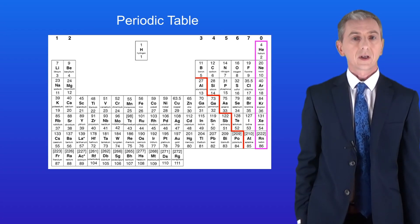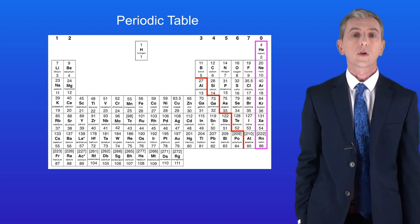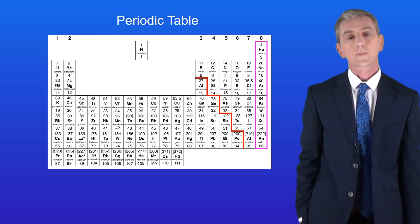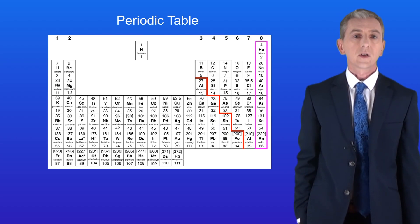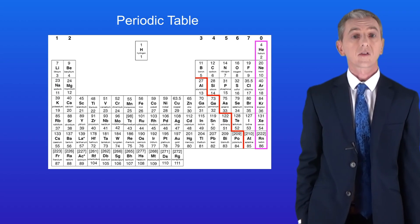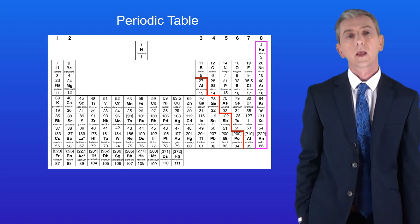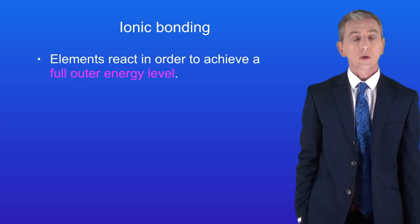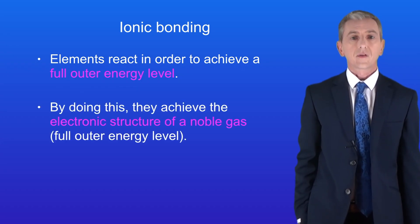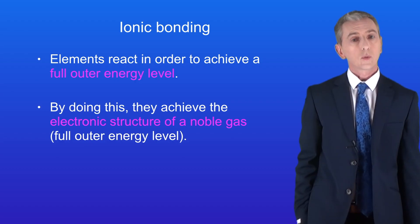Only the elements in group zero have a full outer energy level, and we call group zero the noble gases. In ionic bonding, elements react in order to achieve a full outer energy level, and by doing this they achieve the electronic structure of a noble gas — in other words, a full outer energy level.